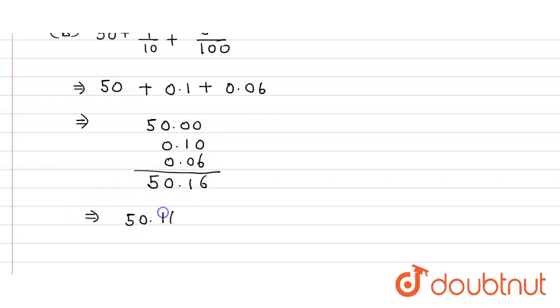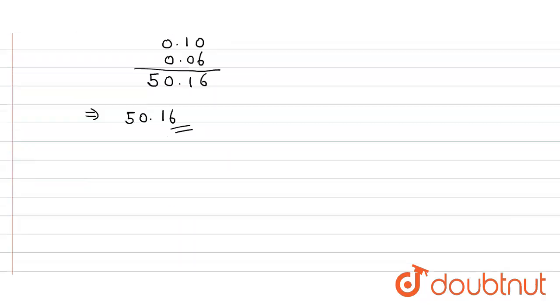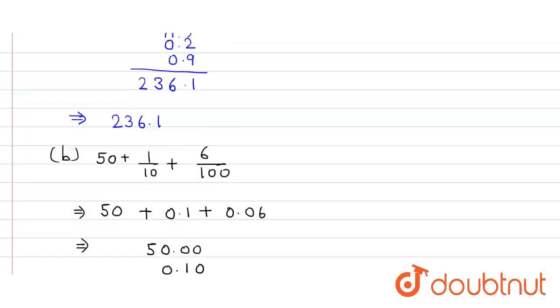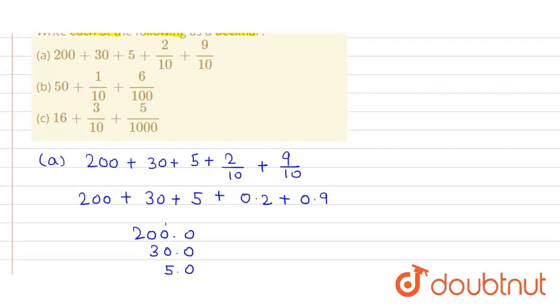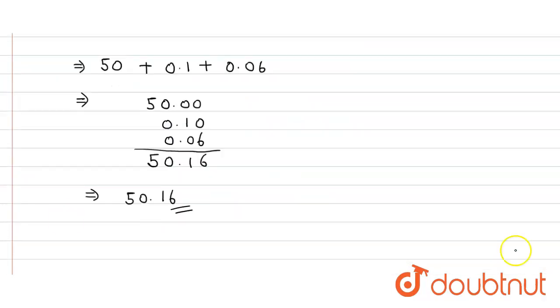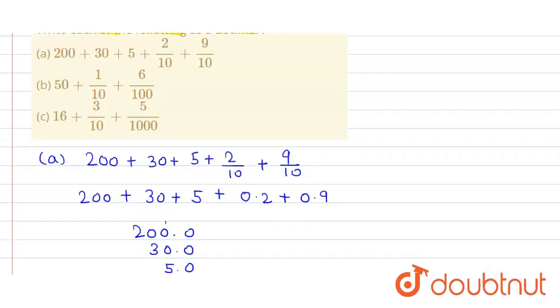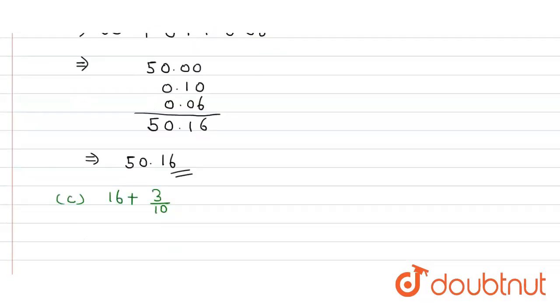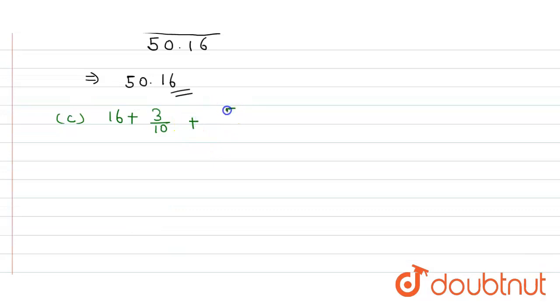Similarly in the third part, here the question is 16 plus 3 by 10 plus 5 by 1000. So here we get 16 plus 0.3 plus here we get 0.005 and now we simply add them.